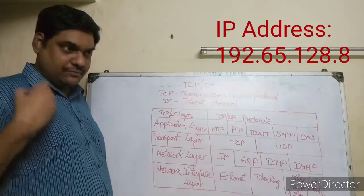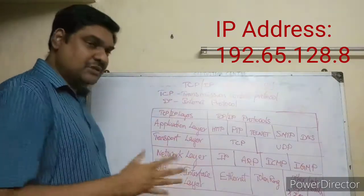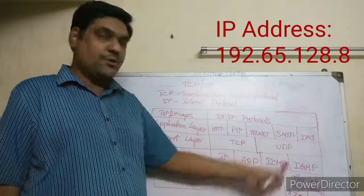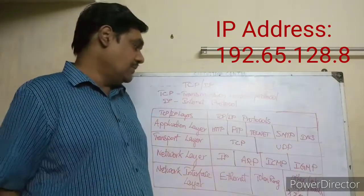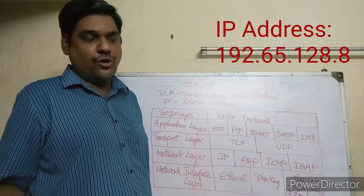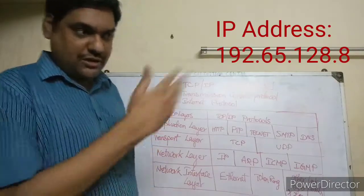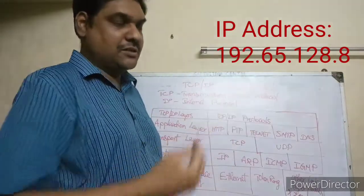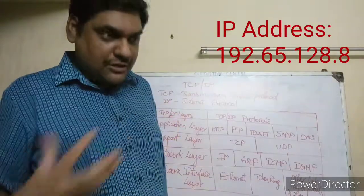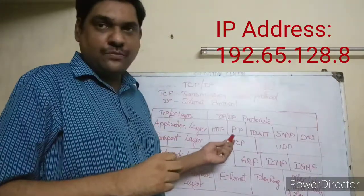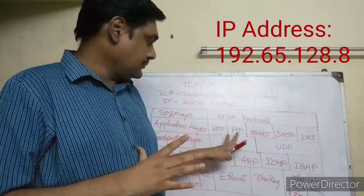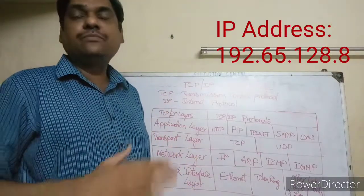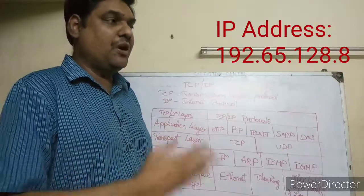The Transport layer is responsible for actually transmitting the data after the Network layer makes it ready. There are two protocols in the Transport layer: TCP — Transmission Control Protocol — and UDP. TCP ensures data reaches its destination reliably, making it a reliable protocol.